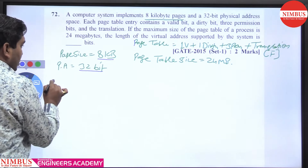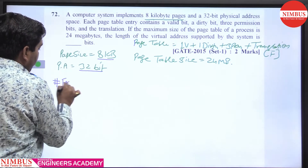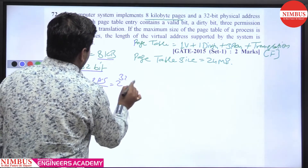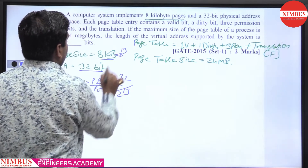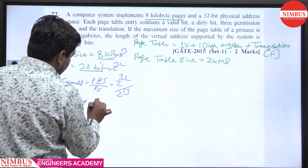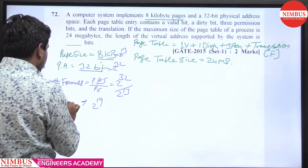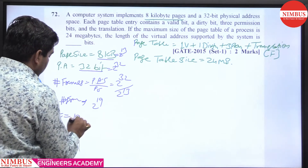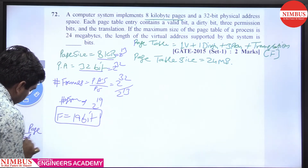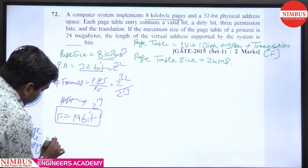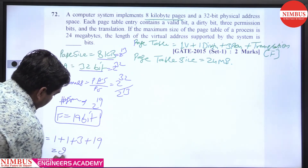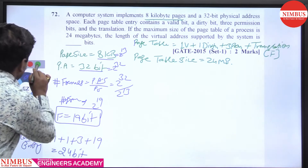First, calculate the number of frames: physical address space divided by page size = 2^32 / 2^13 = 2^19 frames. So F is 19 bits. The page table entry is: 1 valid bit + 1 dirty bit + 3 permission bits + 19 translation bits = 24 bits per page table entry, which equals 3 bytes.